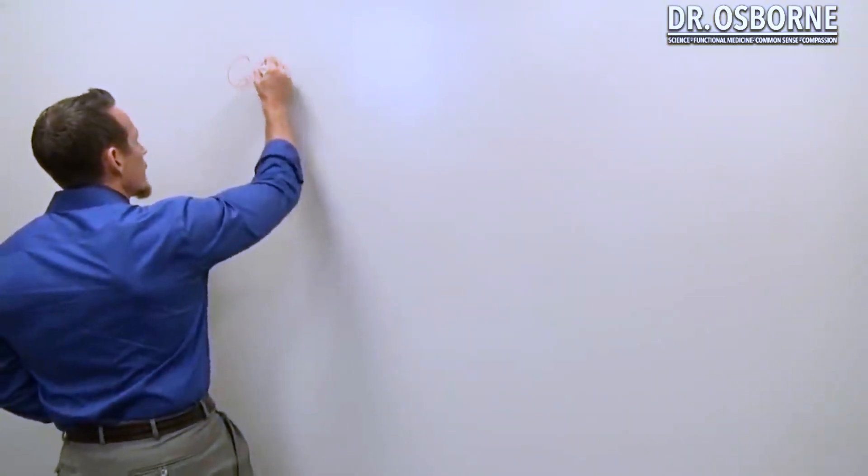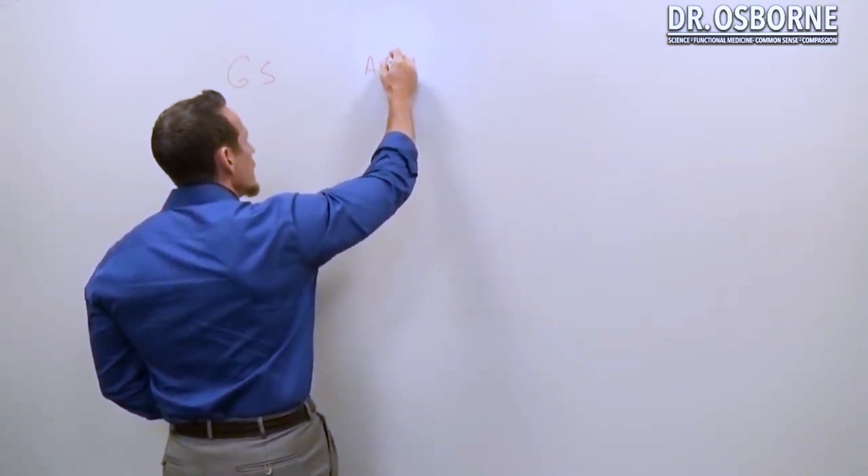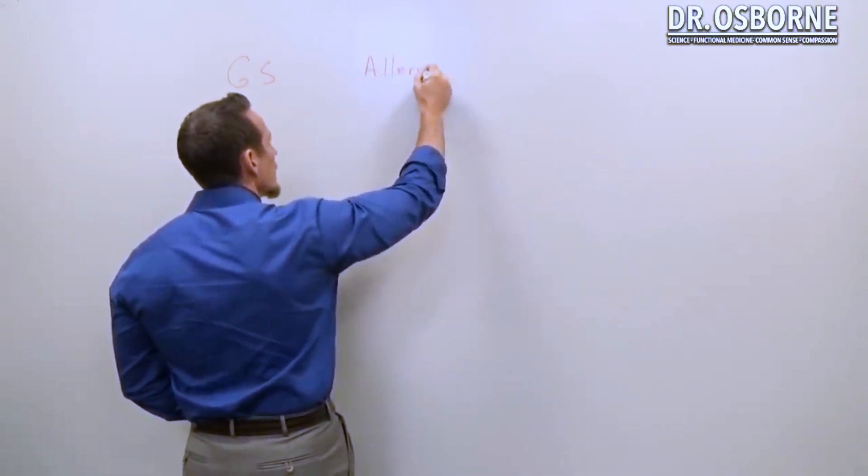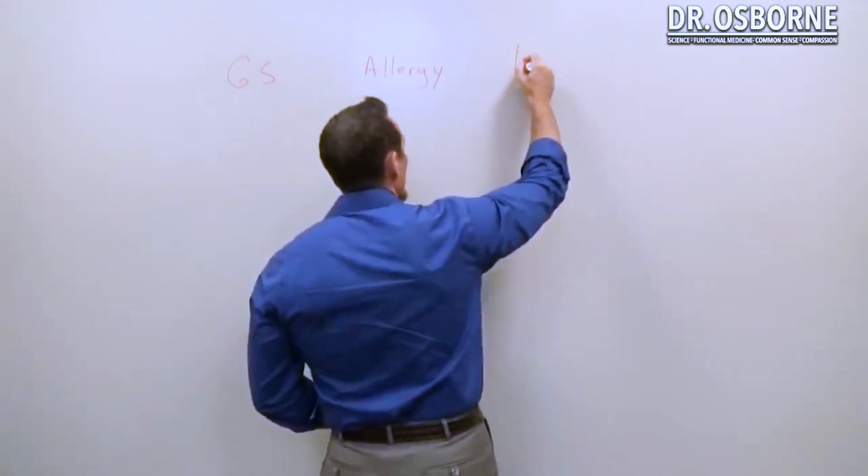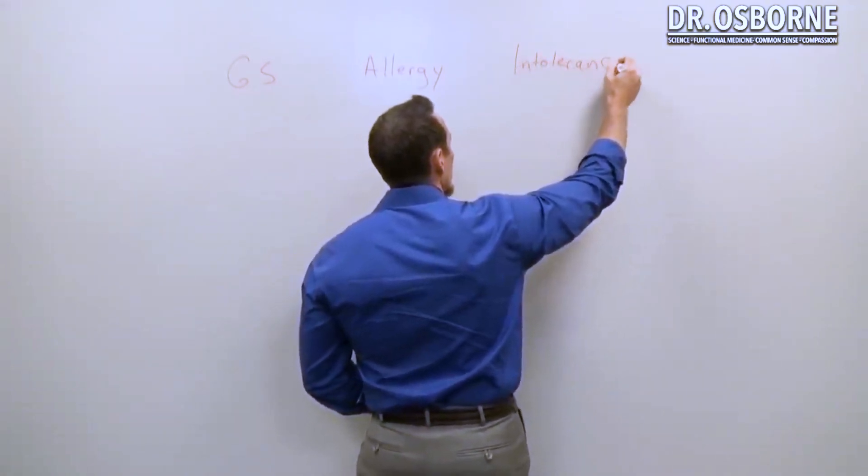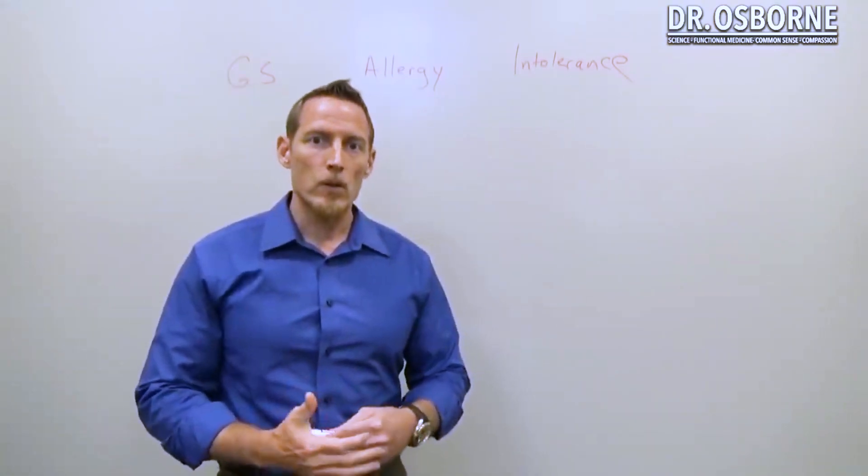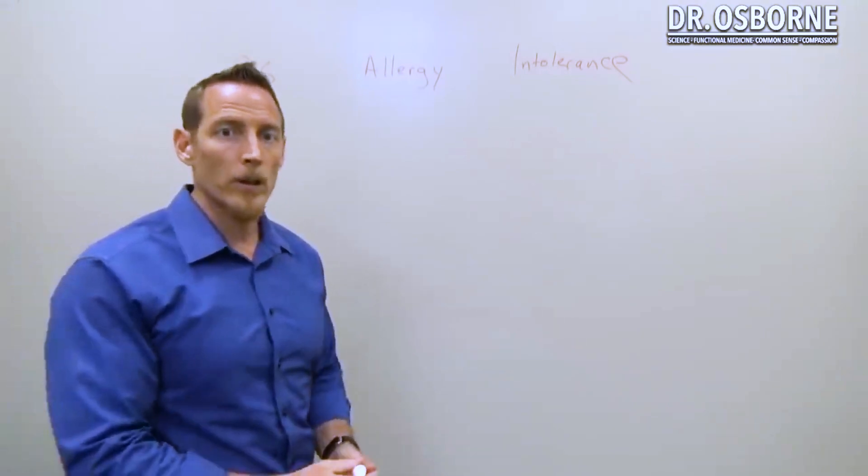We're going to abbreviate here: gluten sensitivity, then you have allergy, then you have intolerance - these are kind of the three areas where we get overlap and confusion and what people think about when they think about gluten sensitivity.